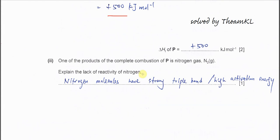Part two: one of the products of the complete combustion of P is nitrogen gas. Explain the lack of reactivity of nitrogen. Very easy. Because nitrogen has the N≡N triple bond, the triple bond is very strong, very hard to break. So you just need to say nitrogen molecules have a very strong triple bond. At the same time, it indicates that it has high activation energy to overcome.